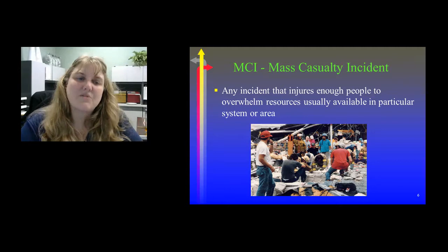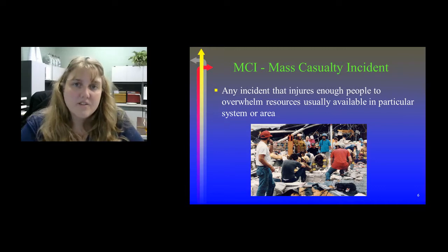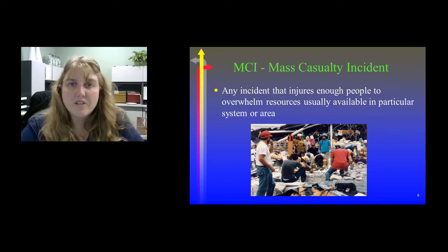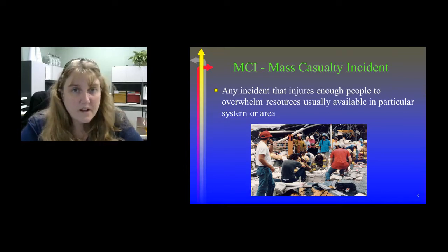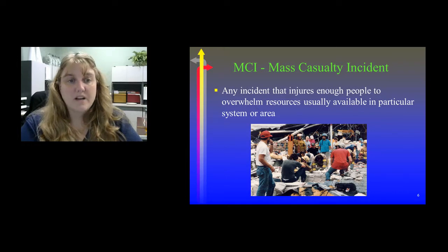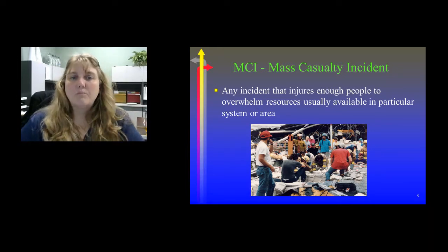A mass casualty incident is defined as any incident that injures enough people to overwhelm some of the resources usually available in a particular system or area. It could be something as simple as three or four patients that have been injured overwhelming an entire system. If one county goes completely out, all trucks are out and you only have one BLS truck available in the entire county — which has happened — then a mass collision on the interstate could very well be a mass casualty incident. Even something as simple as four patients could be a mass casualty incident.